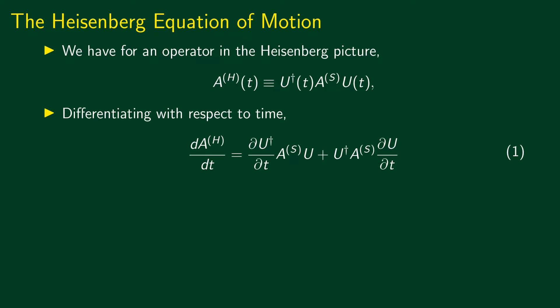We start with the expression relating the Heisenberg picture operator at time t to the Schrödinger picture operator. We saw that A_H(t) is equal to U† A_s U, where A_s, the Schrödinger picture operator, is the same as the Heisenberg picture operator at time t equal to zero. The Schrödinger picture operator does not change with time, so it is always the same as A_H(0). Now let us differentiate this expression with respect to time.